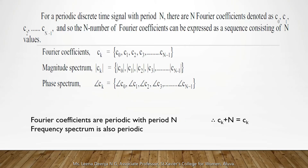For a periodic discrete time signal with period N, there are N Fourier coefficients: c0, c1, ... c(N-1). The Fourier coefficient c(k) is the set {c0, c1, c2, ..., c(N-1)}. The magnitude spectrum |c(k)| is the set {|c0|, |c1|, |c2|, ..., |c(N-1)|}. The phase spectrum angle(c(k)) is the set {angle(c0), angle(c1), angle(c2), ..., angle(c(N-1))}. The Fourier coefficients are periodic with period N, therefore the frequency spectrum is also periodic, meaning c(k+N) = c(k).